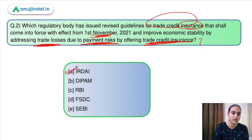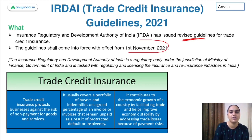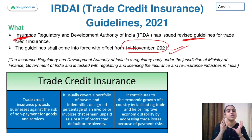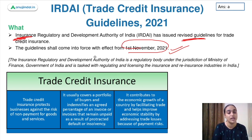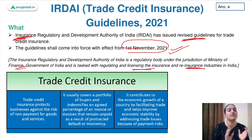IRDAI has issued the Trade Credit Insurance Guidelines 2021, revising the existing guidelines, which will come into effect from 1st November 2021. IRDAI stands for Insurance Regulatory and Development Authority — it is the regulatory body that issues licenses to the insurance and reinsurance industry and works under the Ministry of Finance jurisdiction.